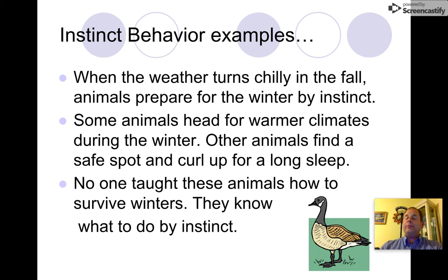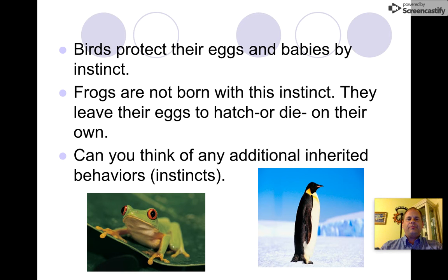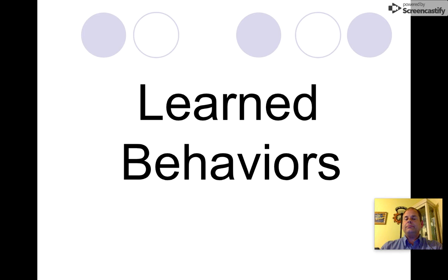When the weather turns chilly in fall, animals prepare for winter by instinct. Some animals head to warmer climates; some curl up and sleep for a long time. No one taught the animals what to do — they have instincts passed down from their parents. Birds protect their eggs and babies by instinct, while frogs leave their eggs to hatch or die on their own.